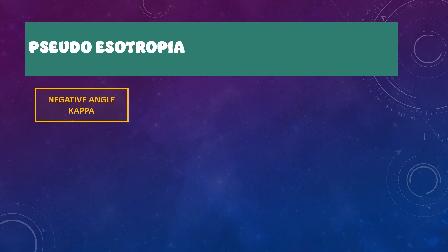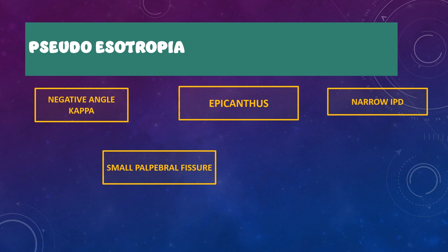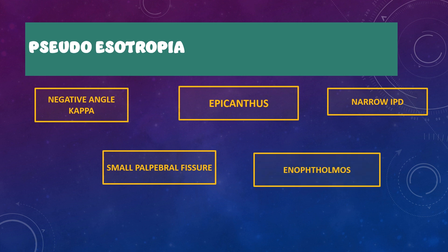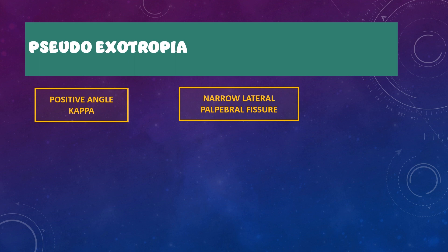To summarize the causes of pseudo-esotropia: a negative angle kappa, epicanthus (differentiated by the pinch test), narrow IPD, small palpebral fissures, and enophthalmos all cause pseudo-esotropia. For pseudo-exotropia: a positive angle kappa and narrow lateral palpebral fissure are causes. In the case of epicanthus, the medial sclera is obscured by the skin fold. If the lateral palpebral fissure is smaller, obscuring the lateral sclera, the cornea appears positioned more laterally, giving an appearance of pseudo-exotropia. A wider interpupillary distance also leads to pseudo-exotropia.